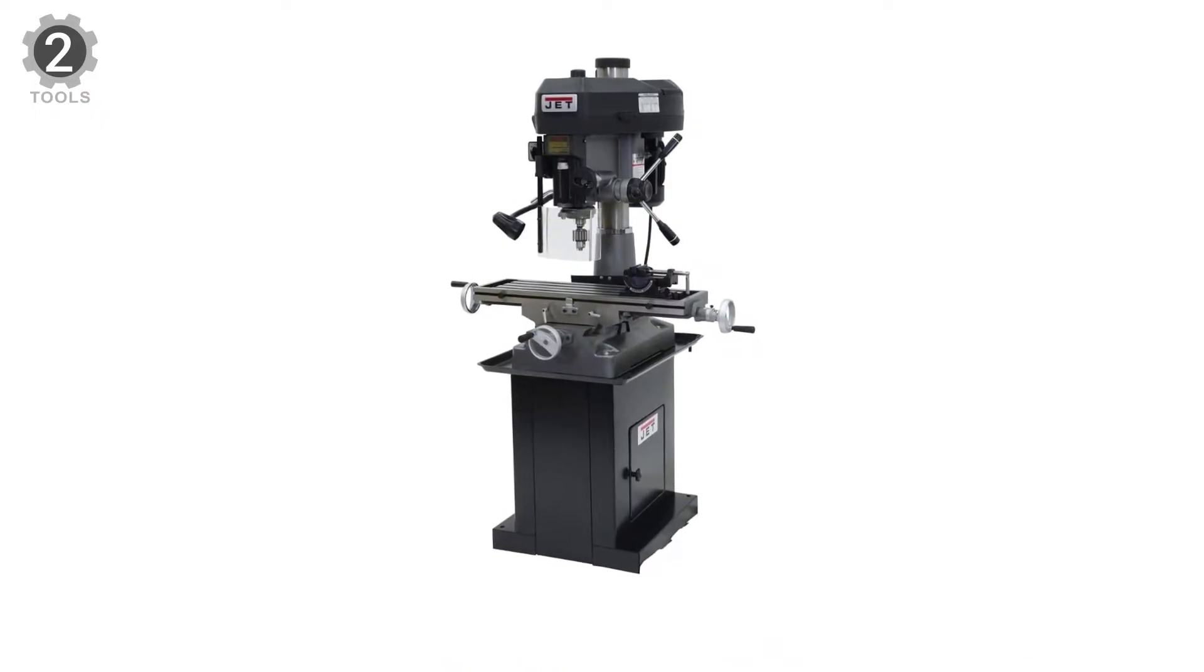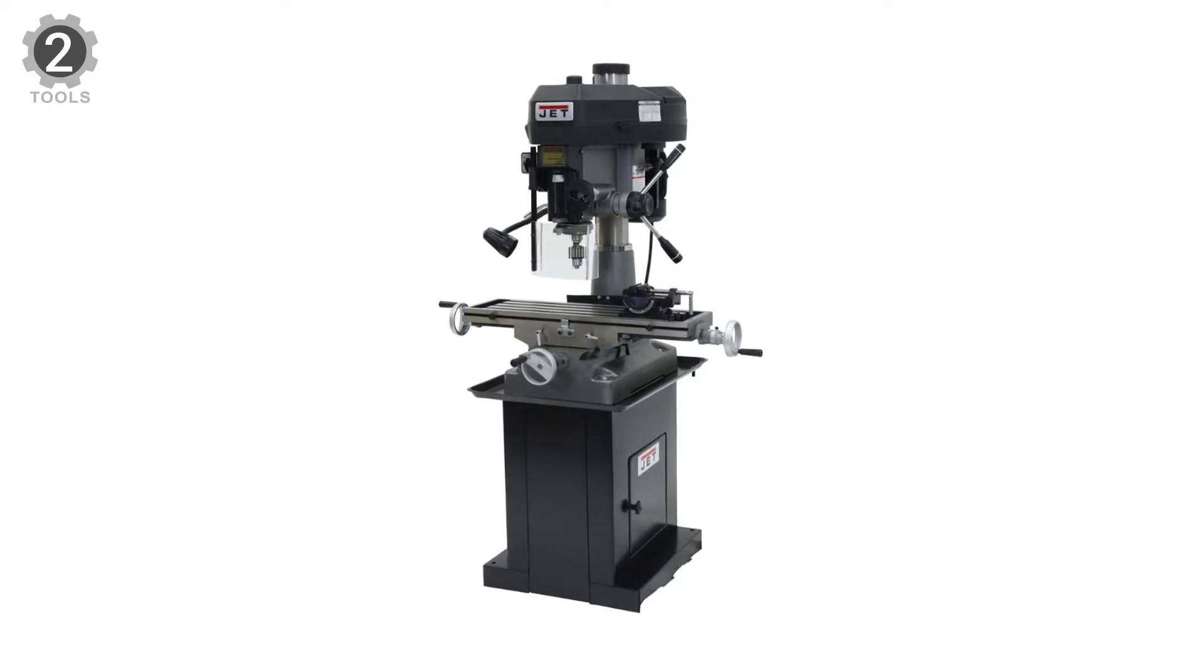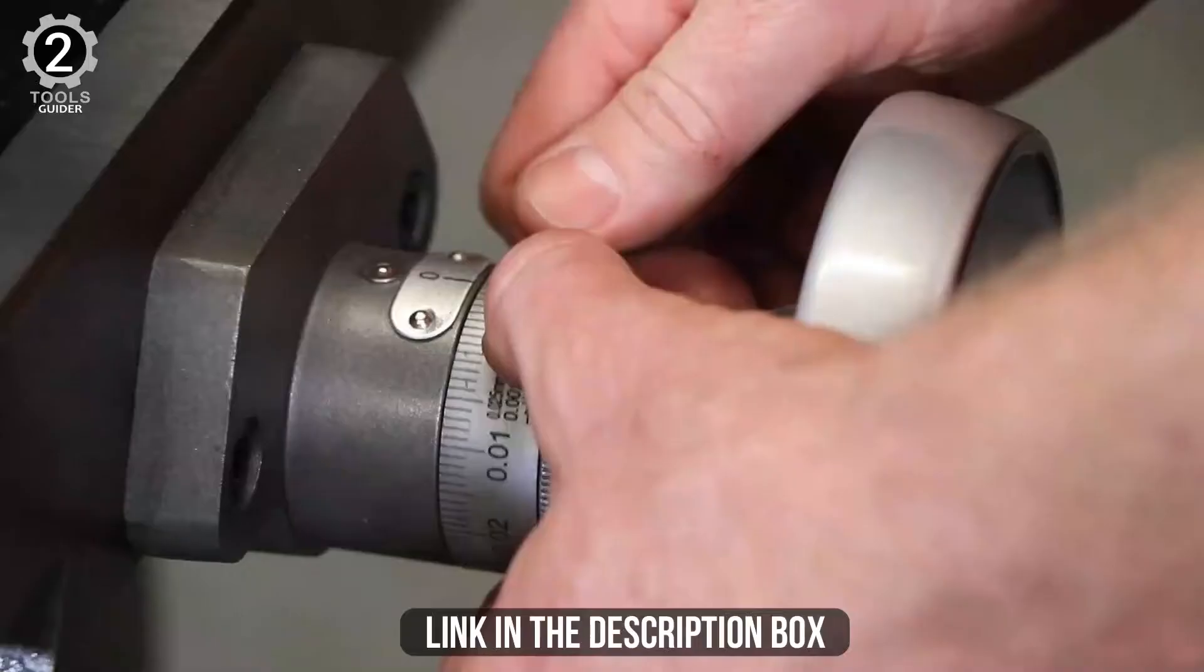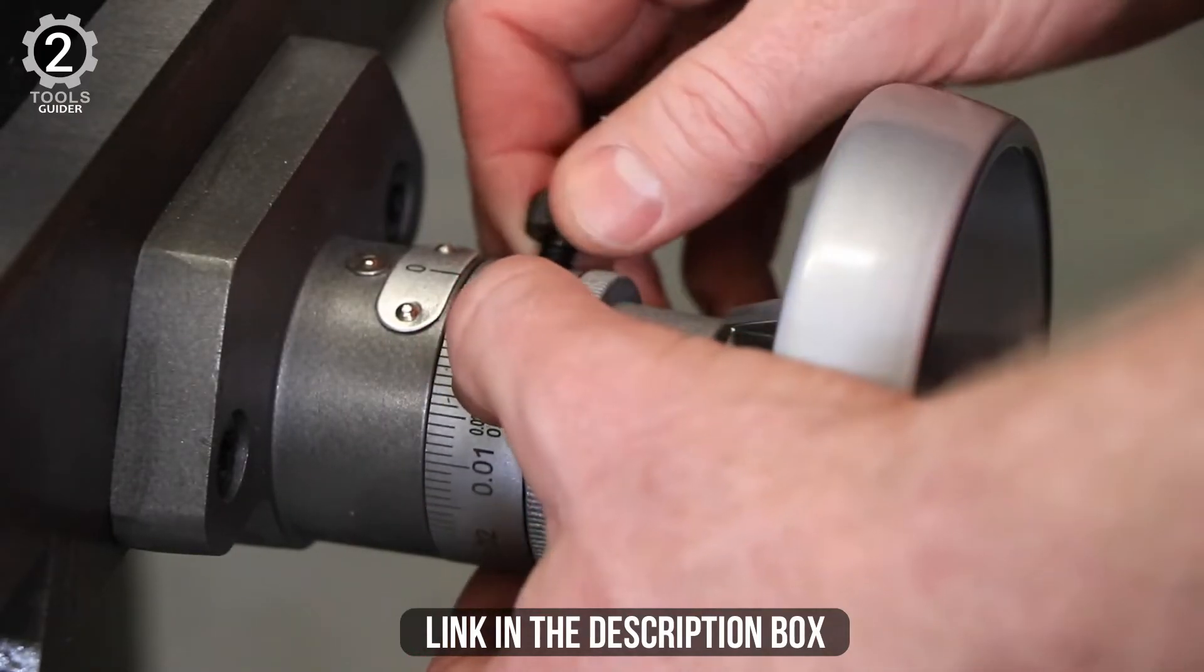Also, the Jet JMD 18 350 018 Mill Drill with R8 Taper is supported by a hinged belt cover for fast speed change. This feature minimizes delays and waste periods when transitioning to different speeds.